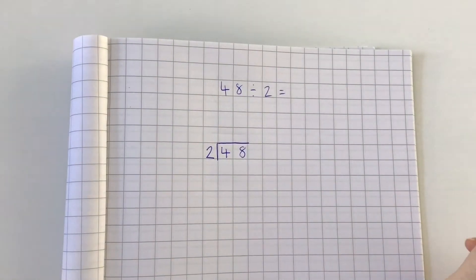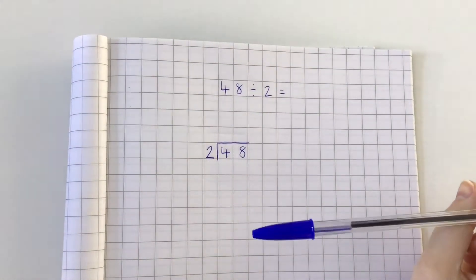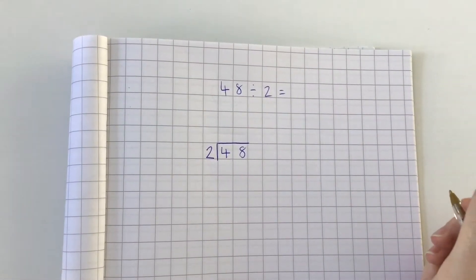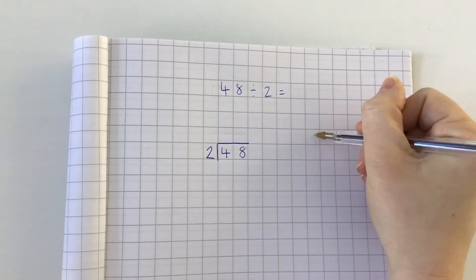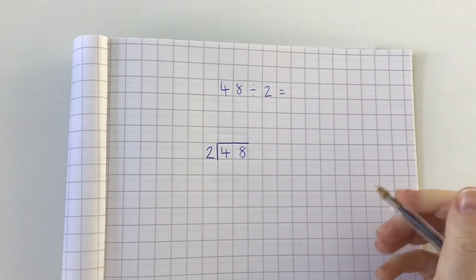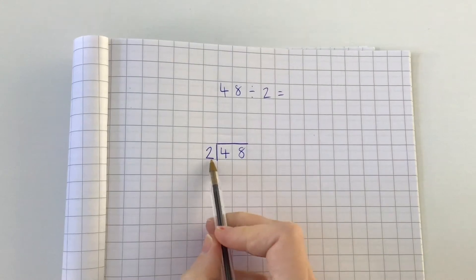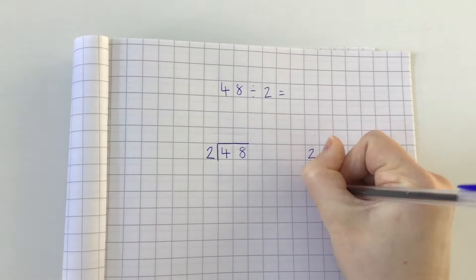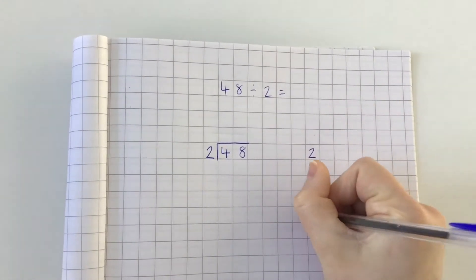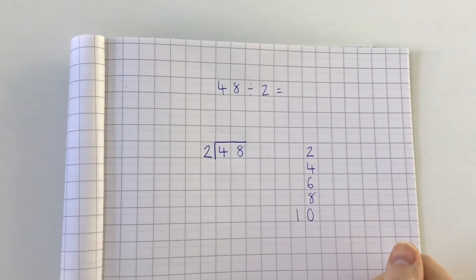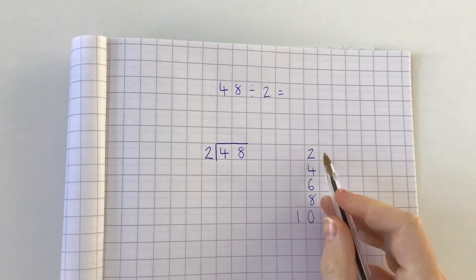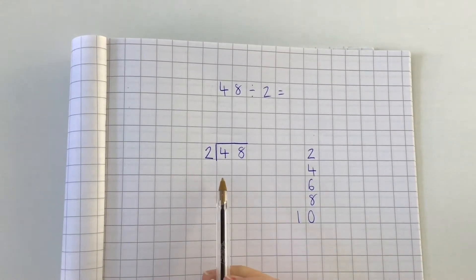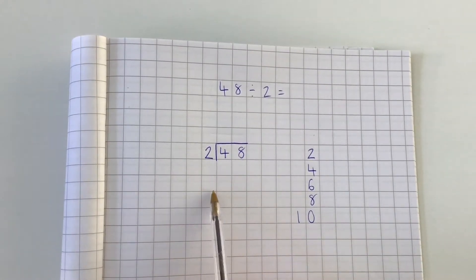Now we're ready to work it out. We've got 48 divided by 2, so we're looking at numbers in the two times tables. It can help to write down the side a list of the times tables you are looking at. So we're looking at the twos — two, four, six, eight, ten. I've just gone up to 2 times 5 for now.